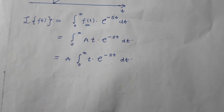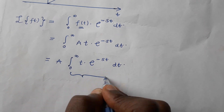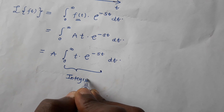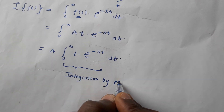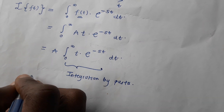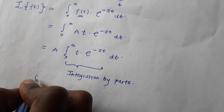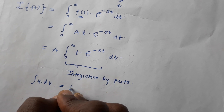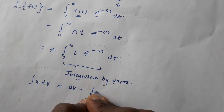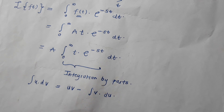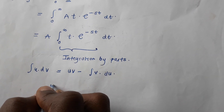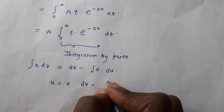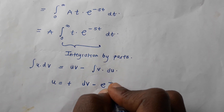To integrate this function as it is, we have to use integration by parts. The parts formula is given by: the integral of u dv equals uv minus the integral of v du. In this case, we choose u to be t and we choose dv to be e^(−st).